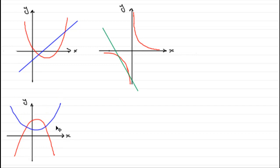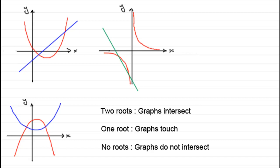So, what I'm trying to say is that when we solve our simultaneous equations, they're going to reduce to a quadratic equation. And when we're trying to find those roots, then two roots will mean that the graphs intersect. One root, the graphs touch. And no roots, the graphs do not intersect.